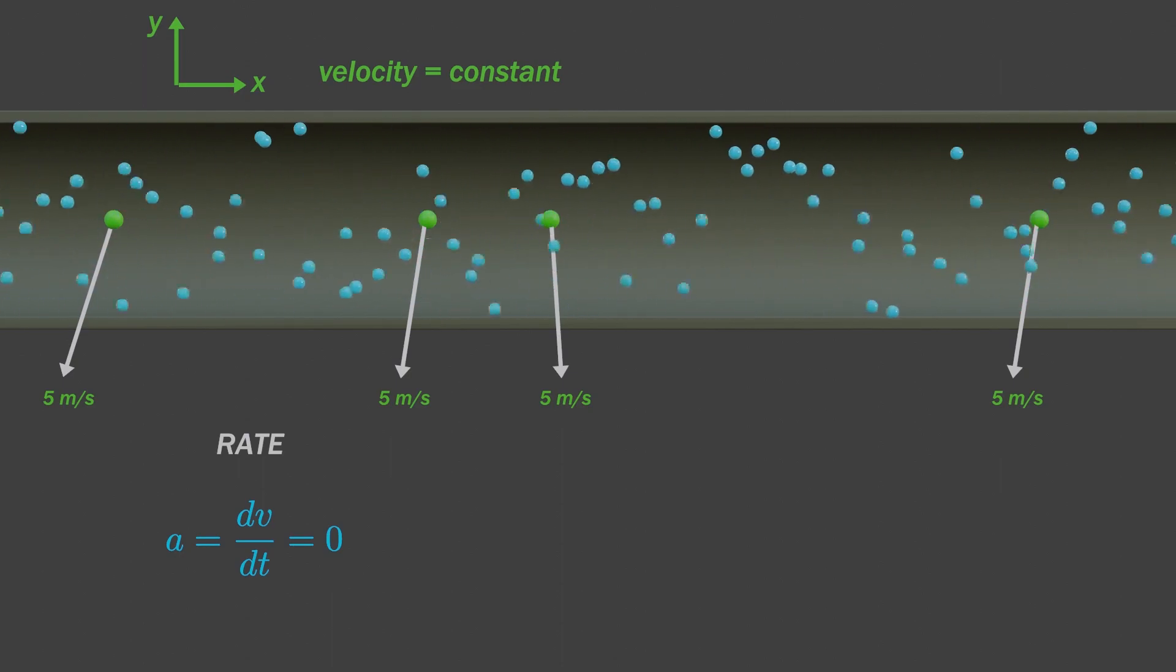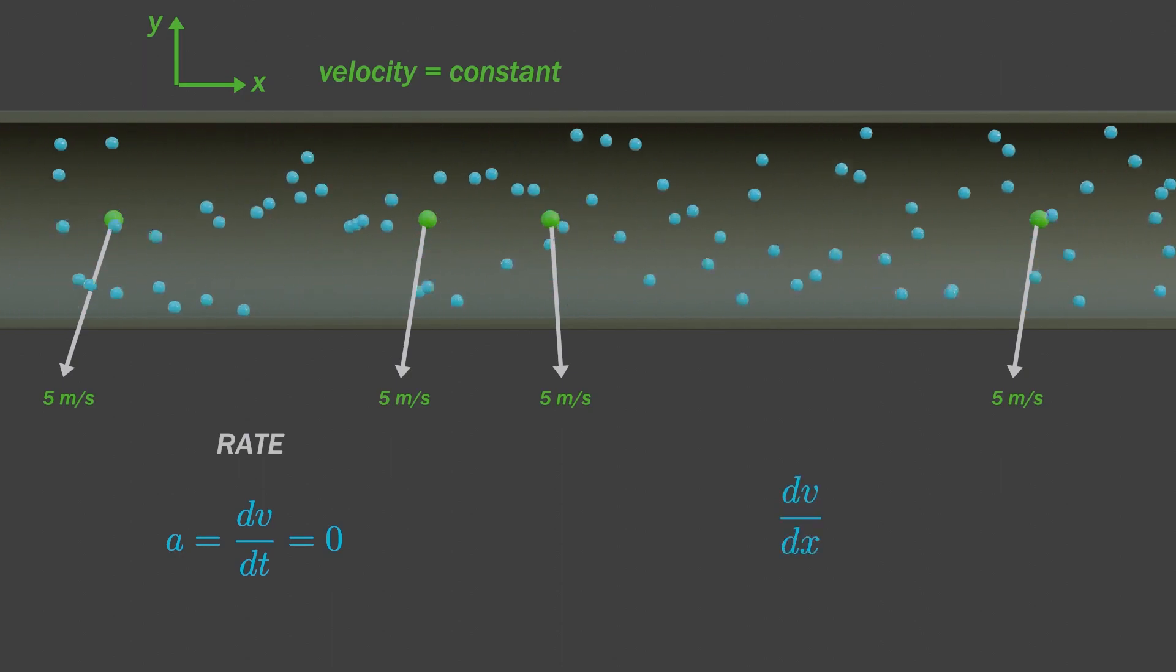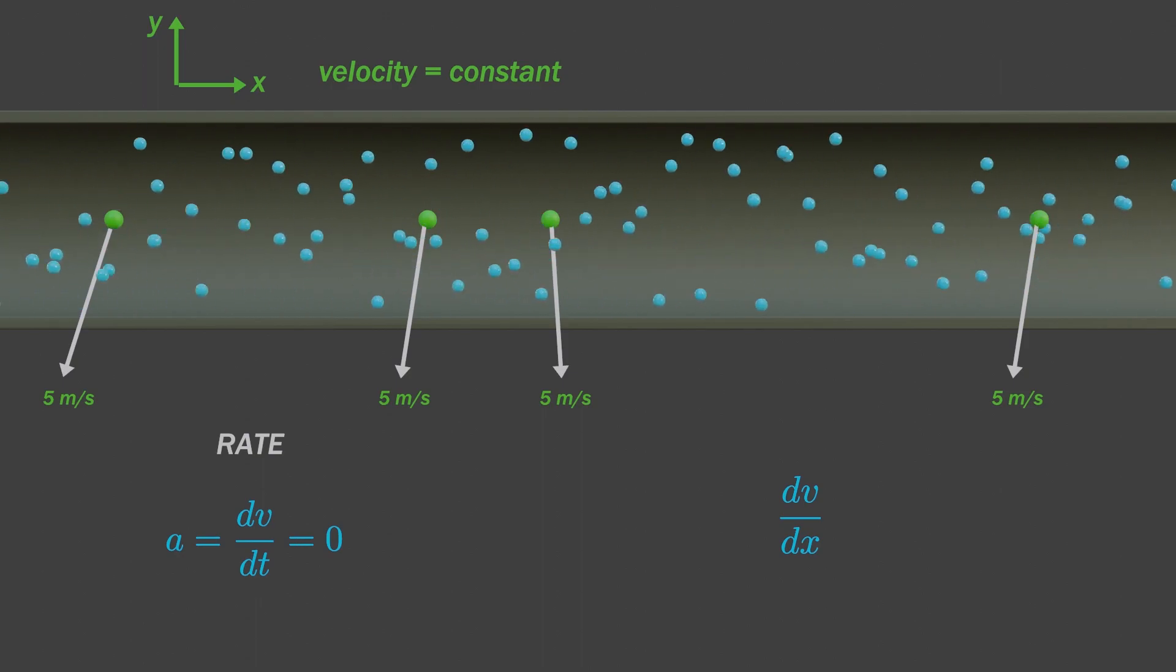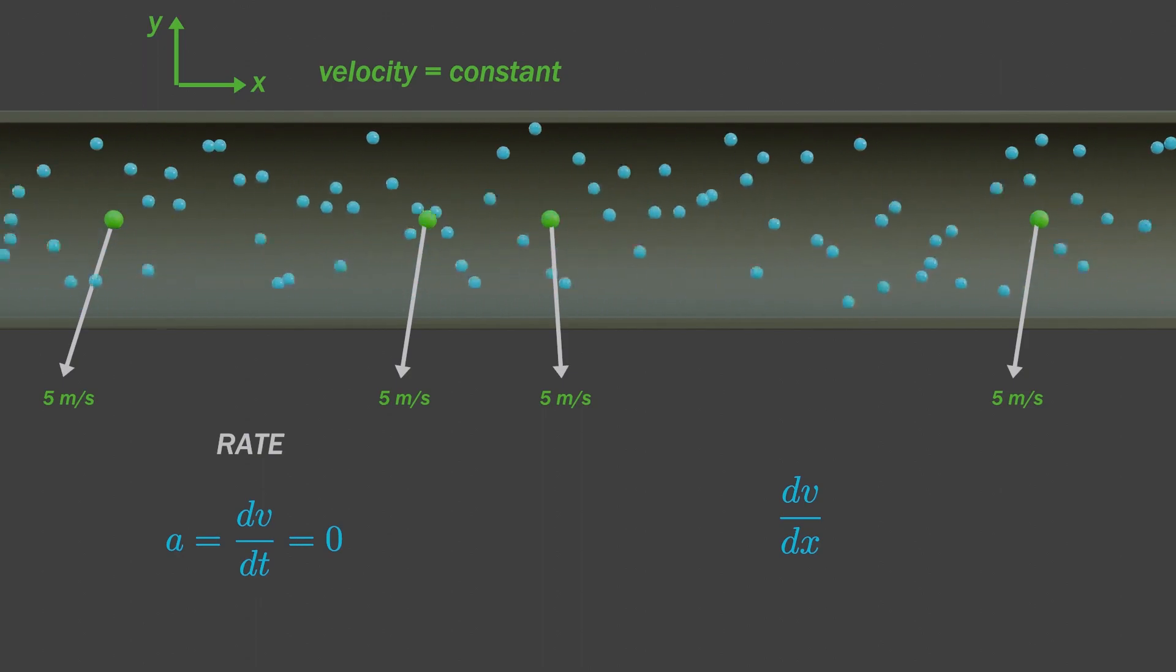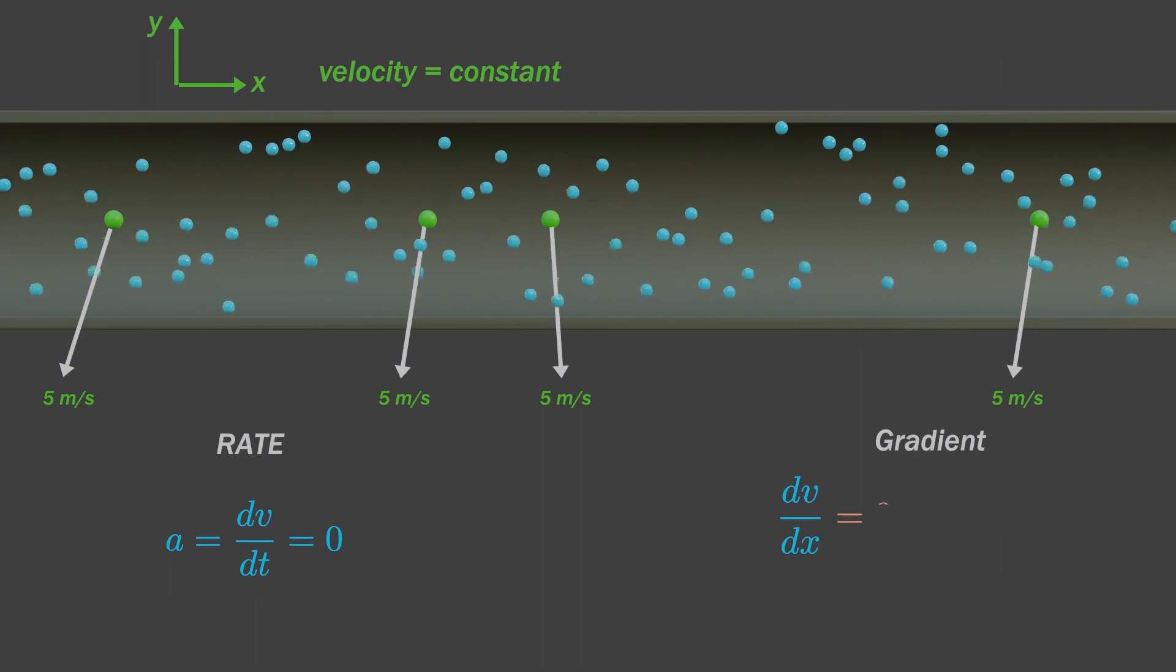But, what about velocity gradient? Well, the velocity is not changing in x direction, so change in velocity with respect to x is zero.